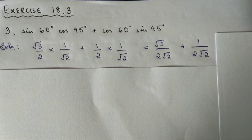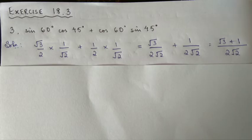Now we have fractions to combine. The denominators are different, so we find the LCM. The LCM of the denominators is 2 root 2. This gives us root 3 plus 1 over 2 root 2. This is the final answer.